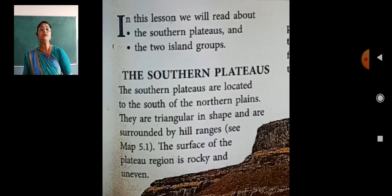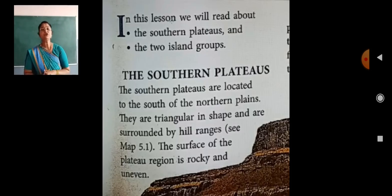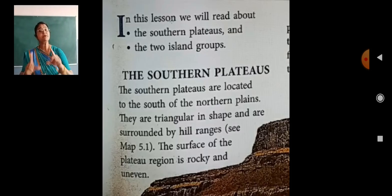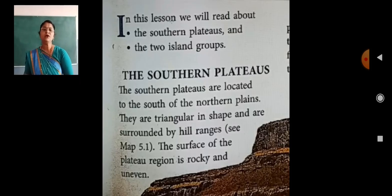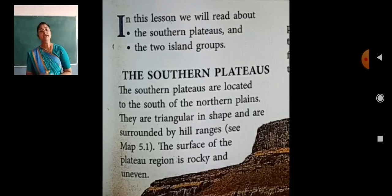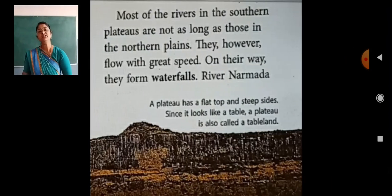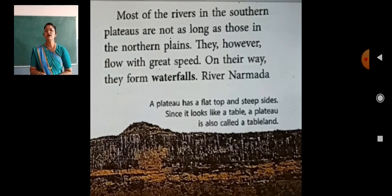The Southern Plateaus are located to the south of the Northern Plains. The surface of the Plateau region is rocky and uneven. Rocky means pathreela and uneven means upar-niche — the surface is not even.